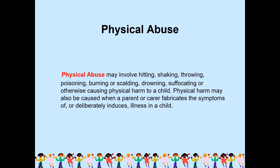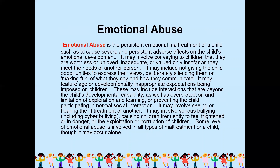Physical abuse may involve hitting, shaking, throwing, poisoning, burning, drowning, suffocating or otherwise causing physical harm to a child. Physical harm may also be caused when a parent or carer fabricates the symptoms of or deliberately induces illness in a child. Emotional abuse is the persistent emotional maltreatment of a child such as to cause severe and persistent adverse effects on the child's emotional development. It may involve conveying to children that they are worthless or inadequate, not giving them opportunities to express their views, silencing them, making fun of them, imposing age-inappropriate expectations, preventing normal social interaction, serious bullying including cyberbullying, or exploitation and corruption of children.